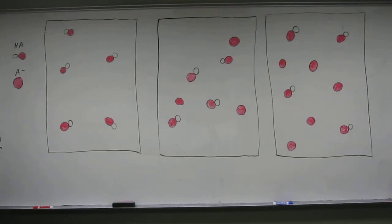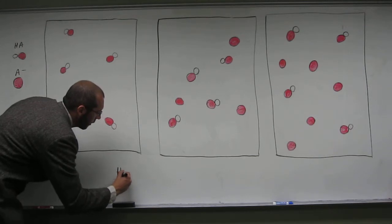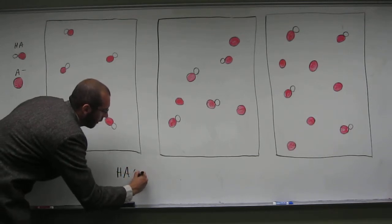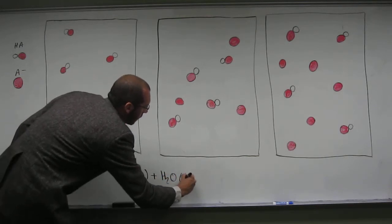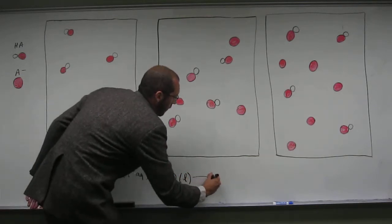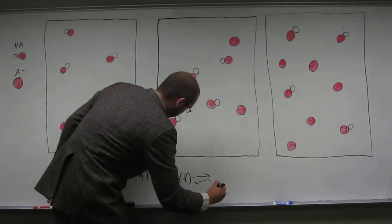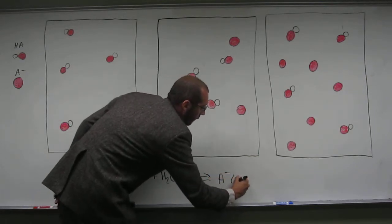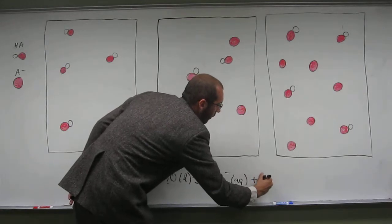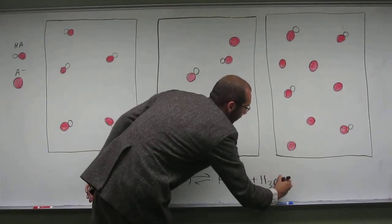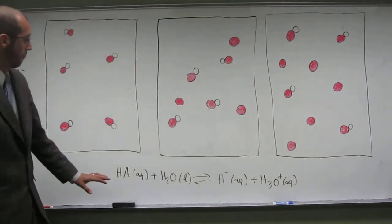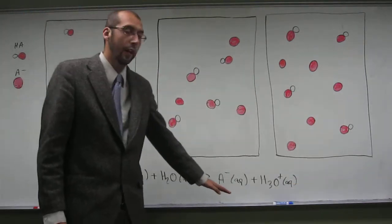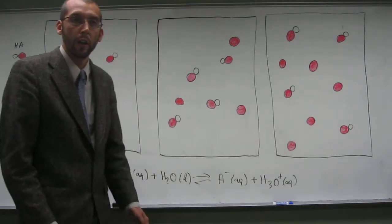If you recall, to solve these types of problems, we need to look at the equation: HA plus H2O in equilibrium with A minus plus H3O plus. So HA dissociating into A minus is what we're talking about.